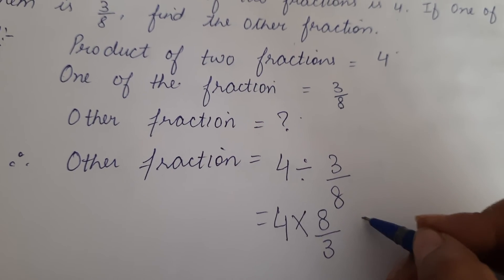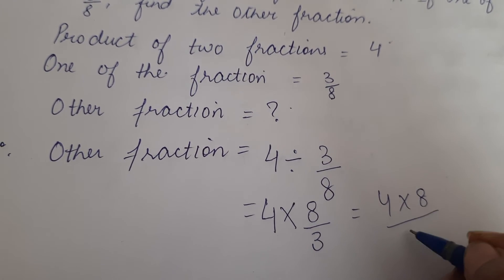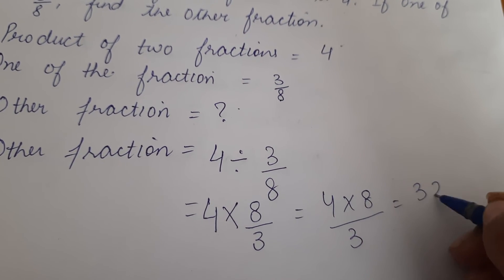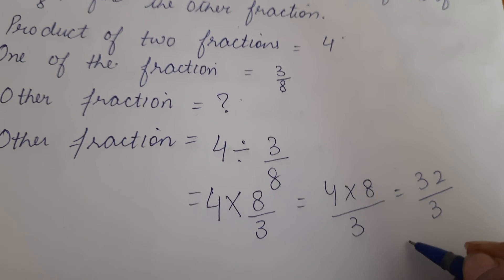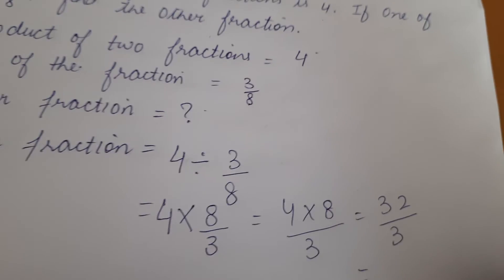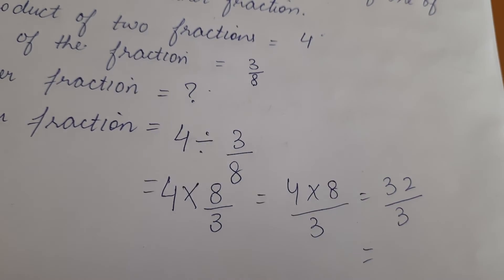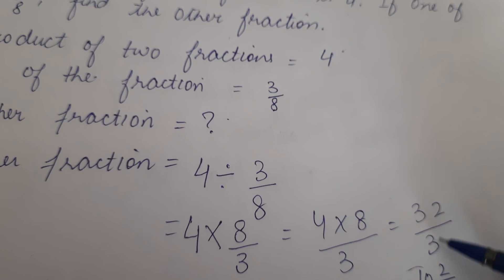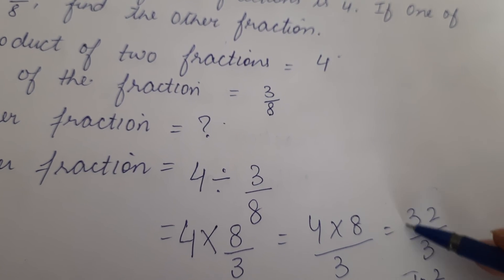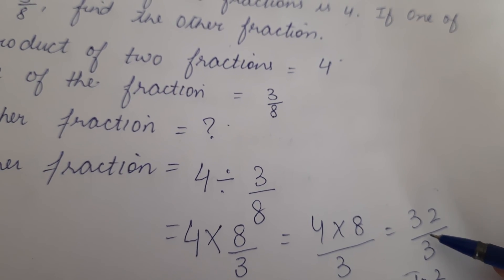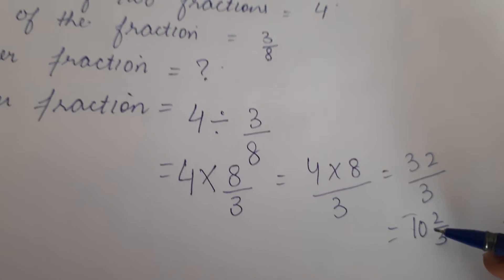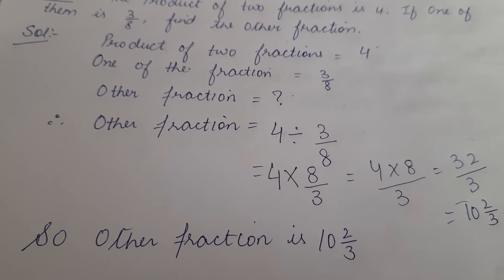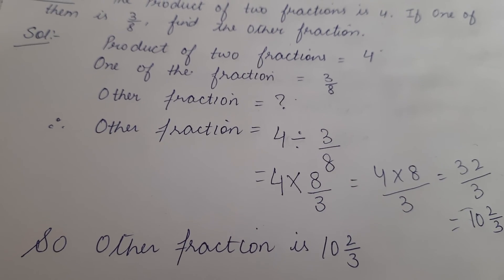So this will be four multiplied by eight upon three, which gives us 32 upon three. Since the numerator is greater than the denominator, we convert this improper fraction into a mixed fraction. So the other fraction is 10 and 2 by 3.